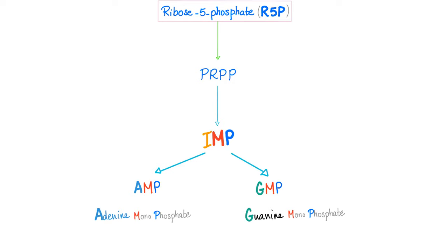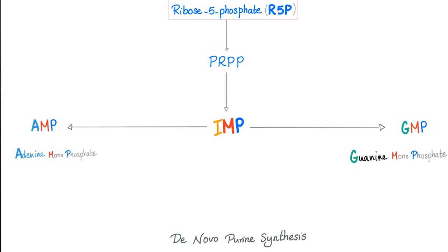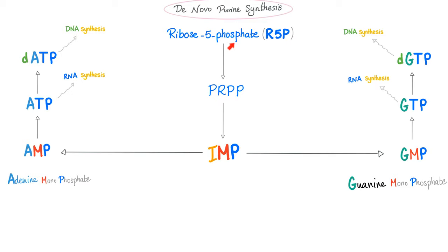To continue de novo purine synthesis: ribose-5-phosphate → PRPP → IMP → AMP → ATP. ATP can go directly into RNA synthesis. But for DNA, we need deoxy ATP. AMP → ATP → dATP for DNA synthesis. Same with GMP → GTP, which is good for RNA. But GTP must become dGTP before it can participate in DNA synthesis.